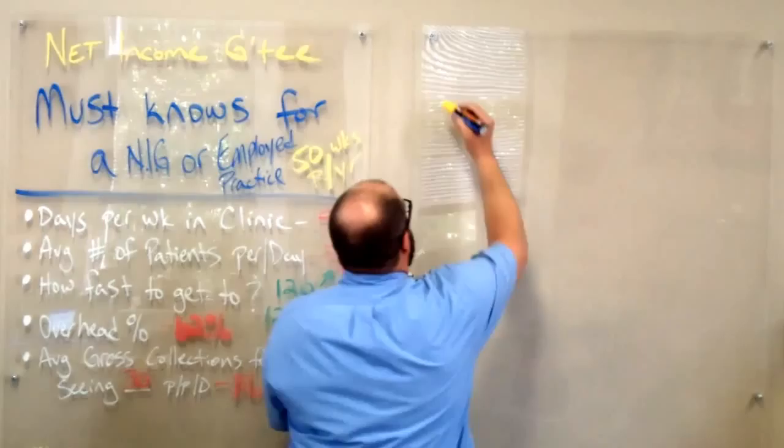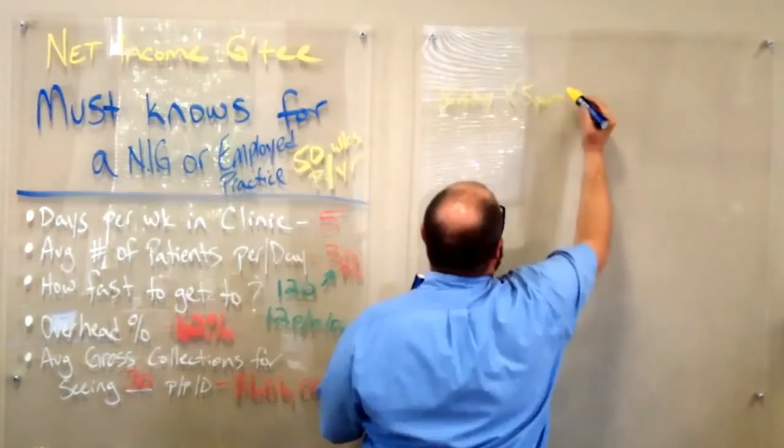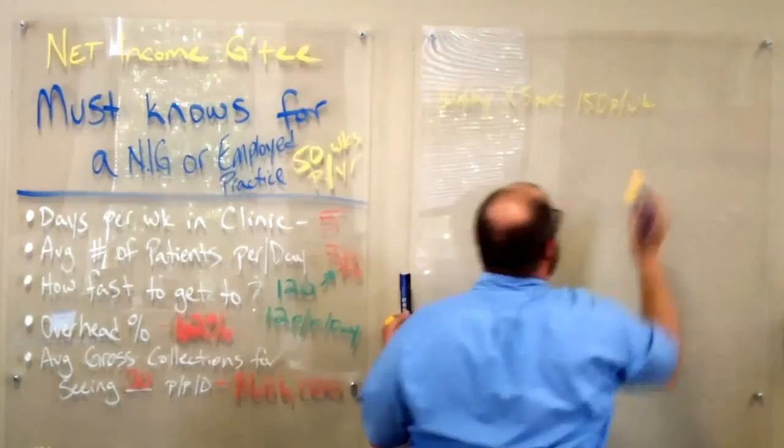So the first thing that we need to do is, in rough math, we need to figure out what are we getting per patient seen on average. So this is how we're going to do that.